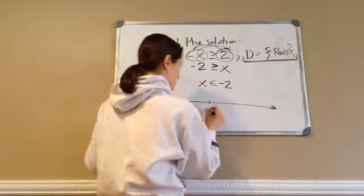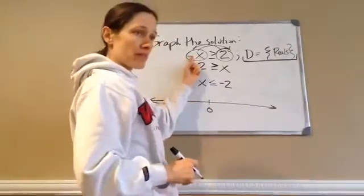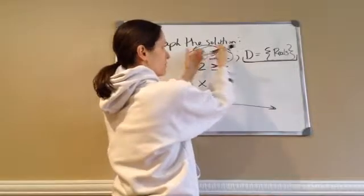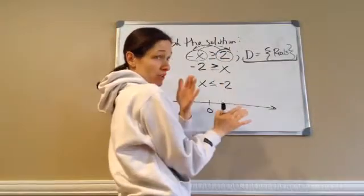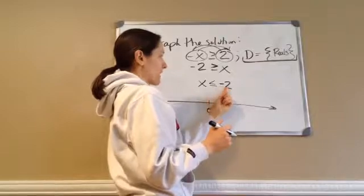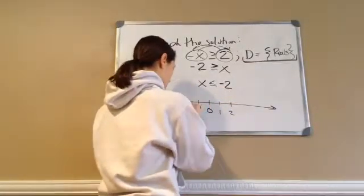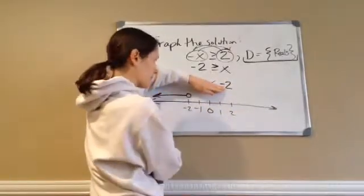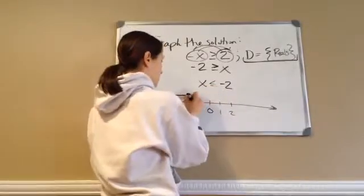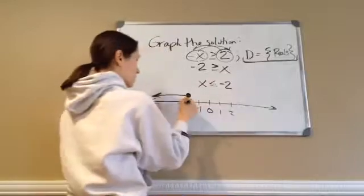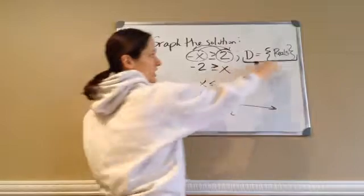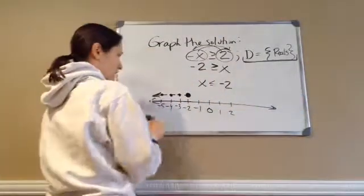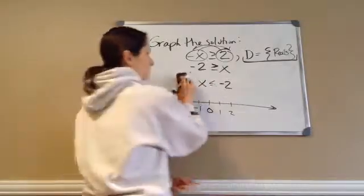So now they want me to graph it. All I wanted to do was get rid of the negative x — the best way is just to move it across. Now, x is less than or equal to negative 2. If x is less than negative 2, it goes this way on the number line, and since it's also equal to negative 2, you fill it in. And because the domain is real numbers, it is all of these — a continuous line.